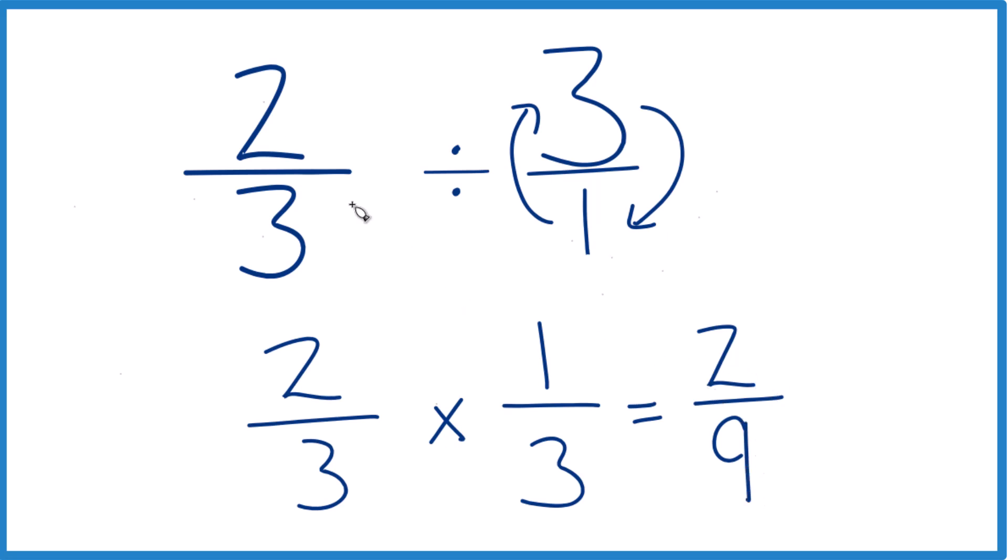So in answer to our question, two-thirds divided by three, or you could say two-thirds times one-third, you end up with two ninths. That's it. This is Dr. B. Thanks for watching.